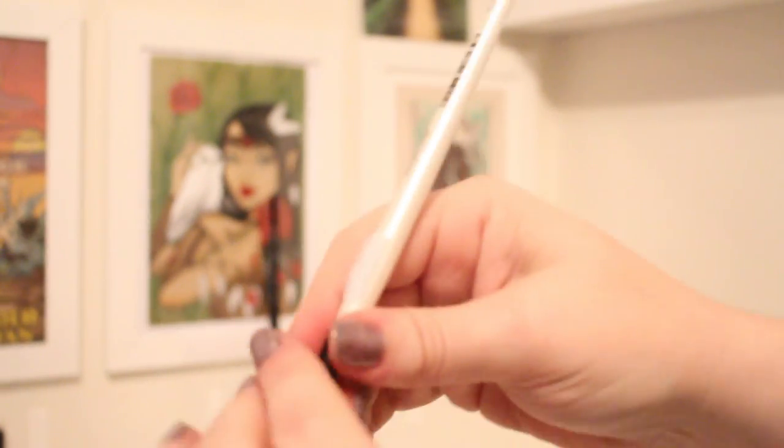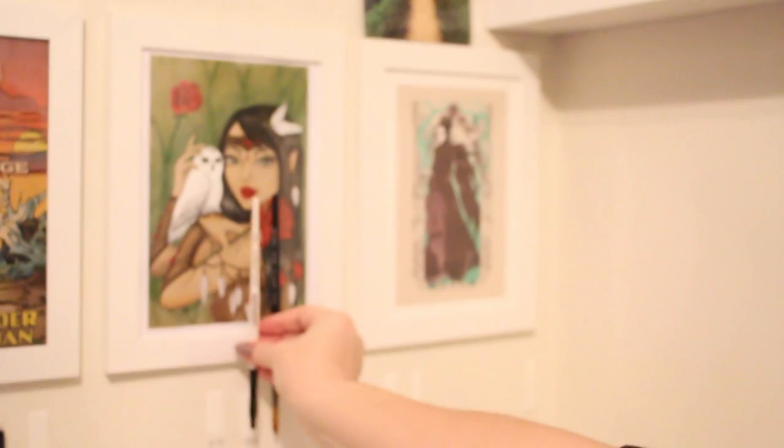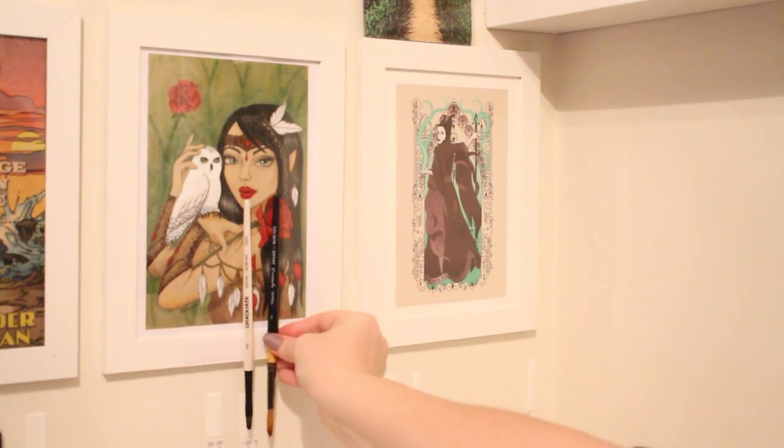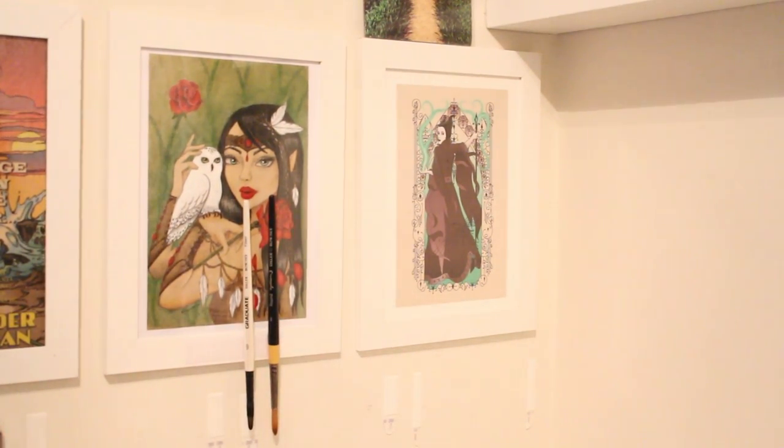You could also use it as a temporary way to store your brushes while they're wet and they're drying, and if you're going to do that I would suggest putting a drip tray underneath.